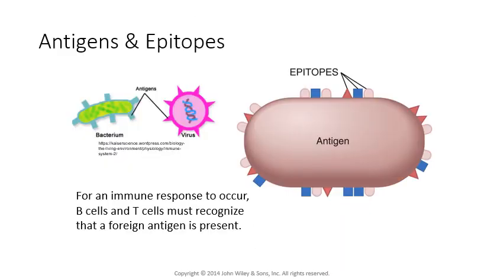Antigens themselves can have multiple antigenic determinants, or epitopes. On the shape of one of these surface molecules for a bacterium, we might be able to recognize that shape from multiple different angles — each one of those angles is considered an epitope. Think of it as a law enforcement analogy: if an antigen is like a criminal, the epitopes are like different angles of the mugshot. We can mount an immune response against each of those different angles — an epitope is just a part of the antigen that your immune system can recognize on its own.